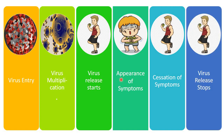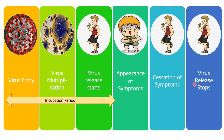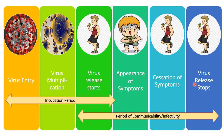Usually in other diseases, the virus release point and the appearance of symptoms overlap, and the cessation of symptoms and the virus release stopping point overlap. However, even though it is a novel coronavirus, epidemiologists have concluded that the virus gets released before the appearance of symptoms, and after the cessation of symptoms the virus release stops. The time interval between virus entry and appearance of symptoms is called the incubation period, and the time interval between virus release from the body to virus release stoppage is called the period of communicability, or period of infectivity.